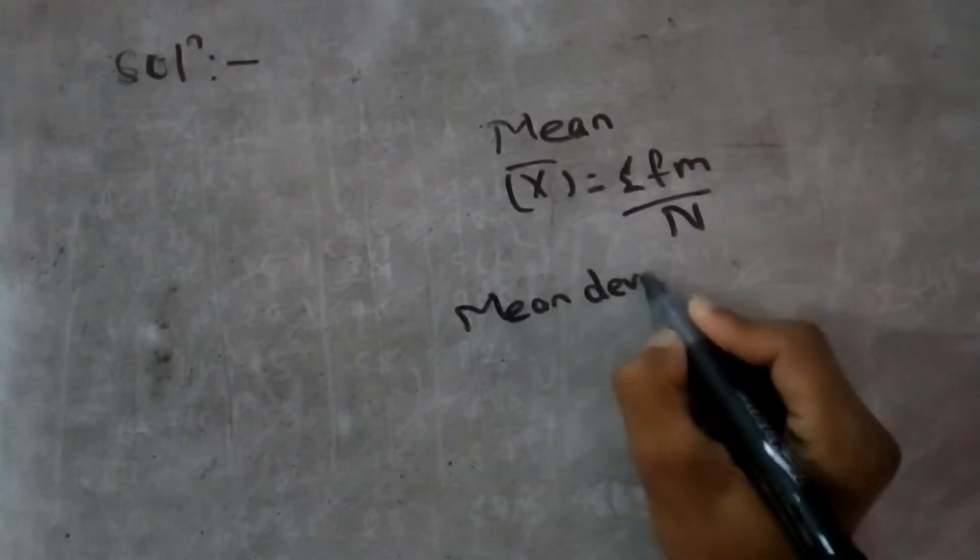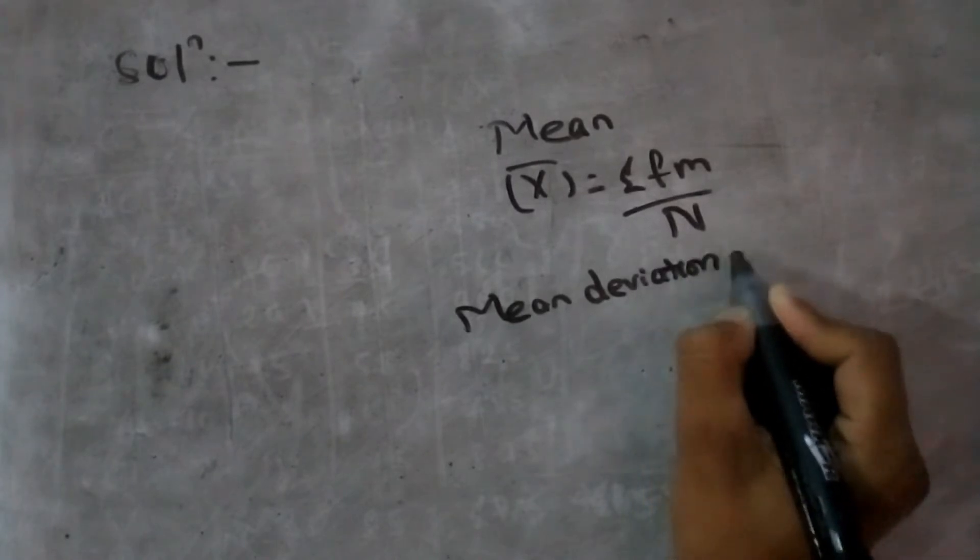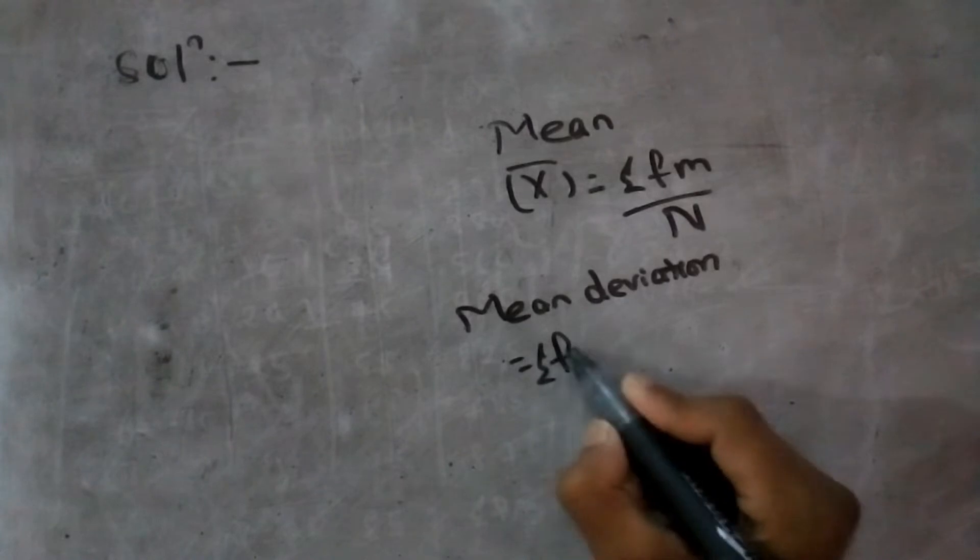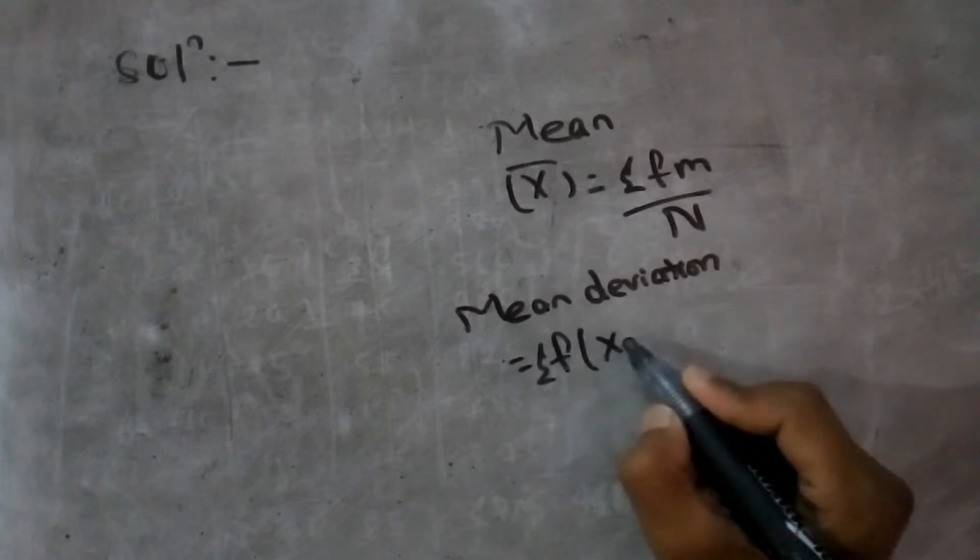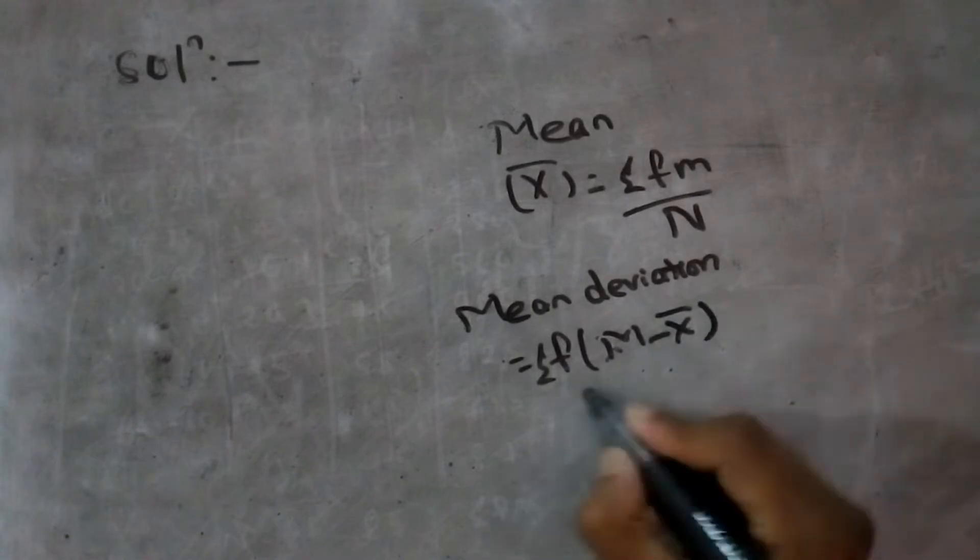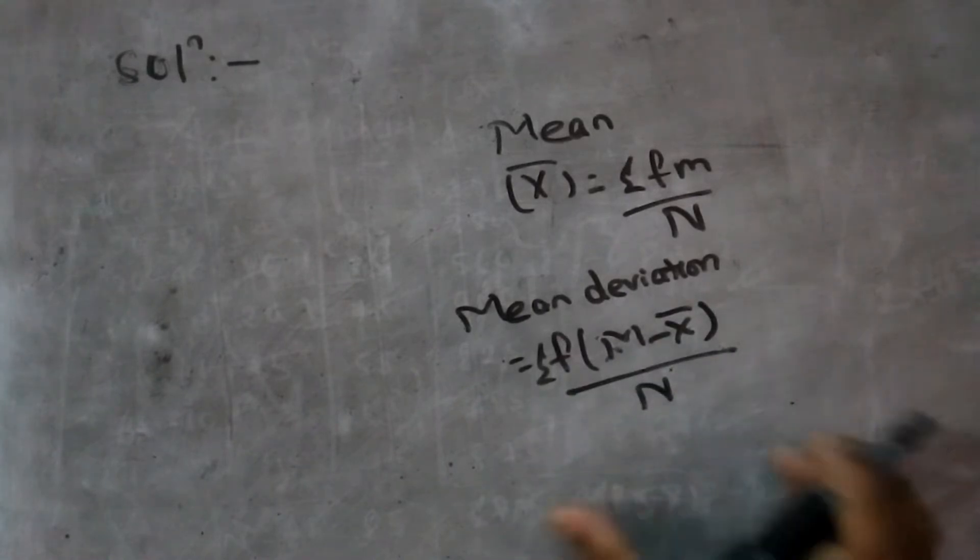Mean deviation calculation formula: summation of f times m minus x bar, divided by n. This is your formula.